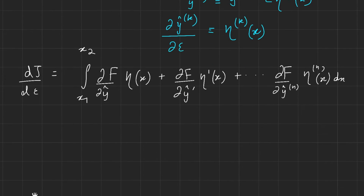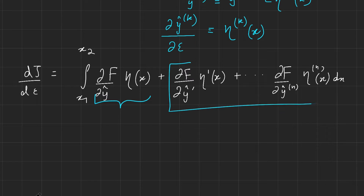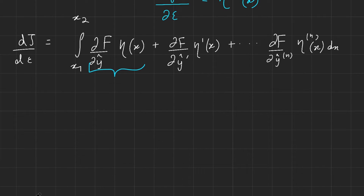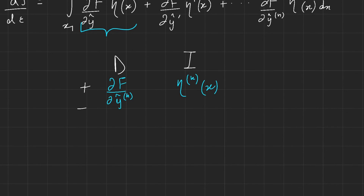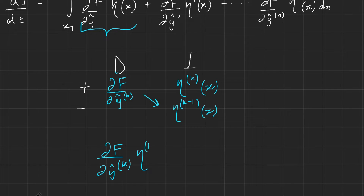Let's consider the general case using the DI method for integration by parts. We differentiate (∂f/∂y_hat⁽ᵏ⁾) and integrate η⁽ᵏ⁾(x). Integrating η⁽ᵏ⁾ with respect to x gives η⁽ᵏ⁻¹⁾, and integration by parts yields the boundary term: (∂f/∂y_hat⁽ᵏ⁾)·η⁽ᵏ⁻¹⁾(x) evaluated at x₁ and x₂.